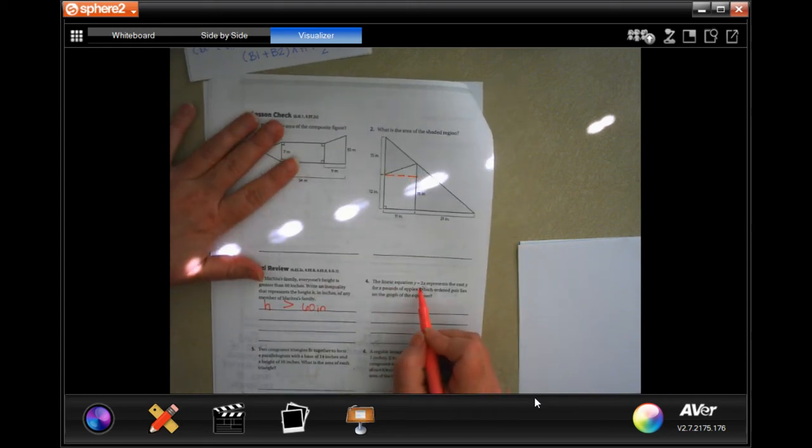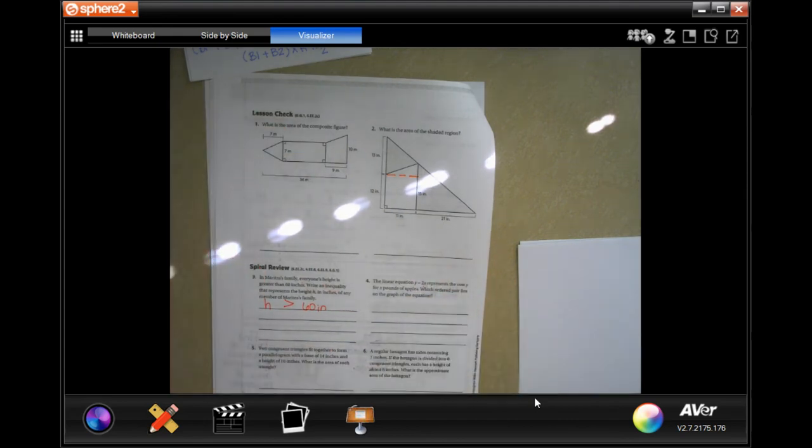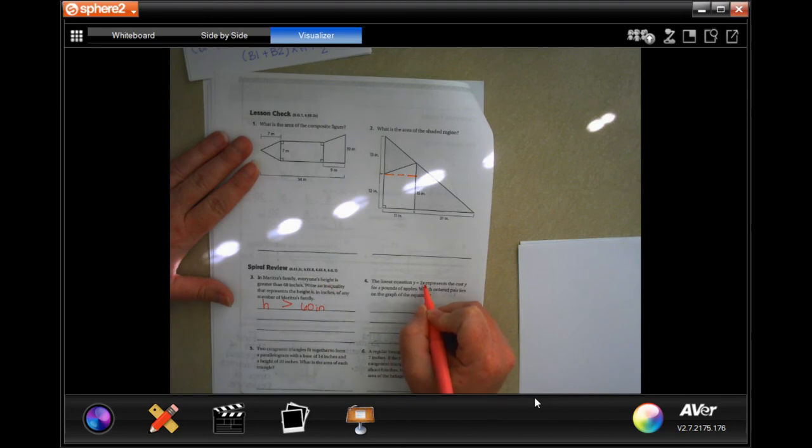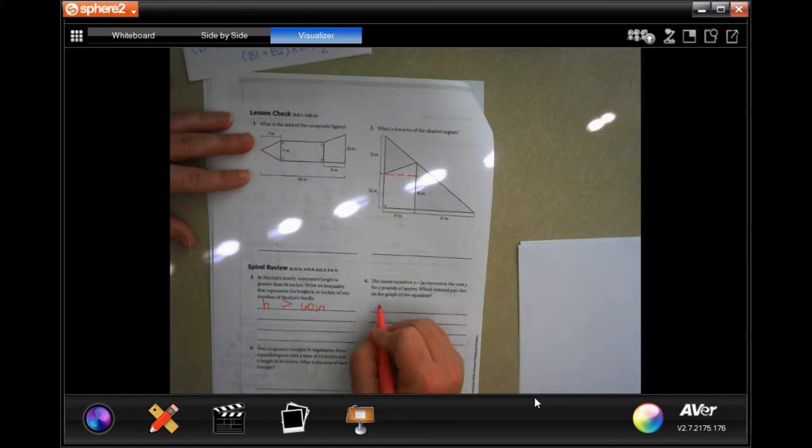The linear equation y equals 2x represents the cost y for x pounds of apples. Which ordered pair lies on the graph of the equation? We could do this: if we did 2 pounds, then it would be 2 times 2, which is 4, so 2, 4.